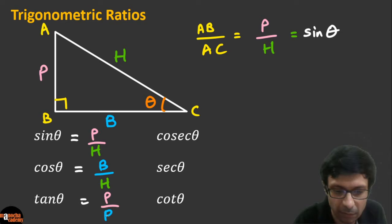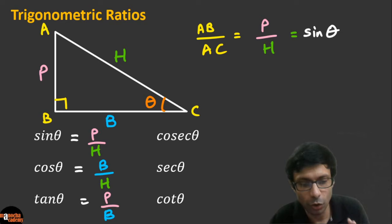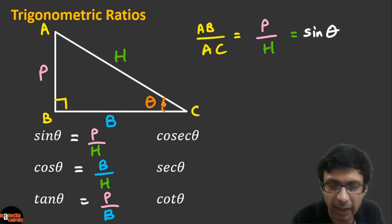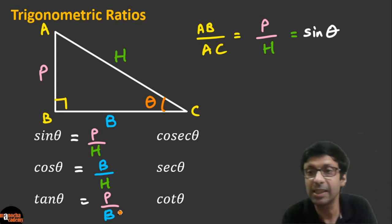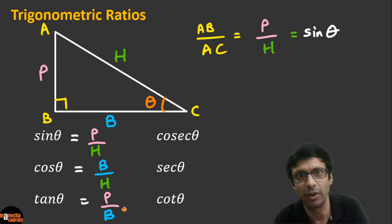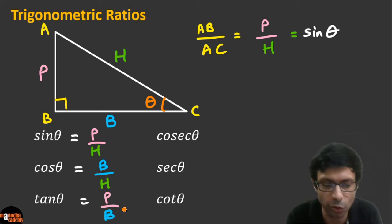And if you take the ratio of AB/BC, which is perpendicular by base, we get tan theta. So tan θ = P/B. To summarize: sine θ = P/H, cos θ = B/H, and tan θ = P/B. Some of you are using the terms 'opposite', 'adjacent', and 'hypotenuse' — that's fine too.